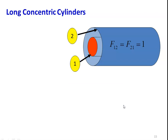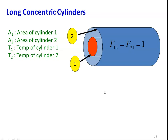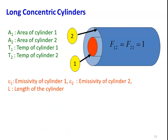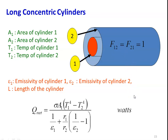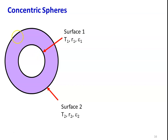For long concentric cylinders: inner cylinder has area A1, temperature T1, emissivity ε1; outer cylinder has area A2, temperature T2, emissivity ε2, and L is the length. The shape factor F12 = F21 = 1. The simplified equation is: Q_net = σ·A1·(T1⁴ − T2⁴) / [1/ε1 + (r1/r2)·(1/ε2 − 1)], where A = π·d·L.